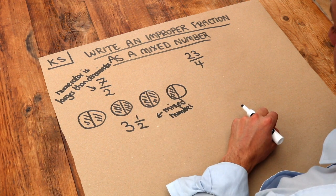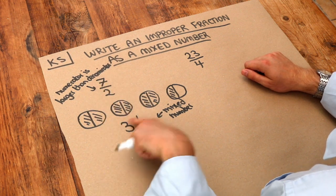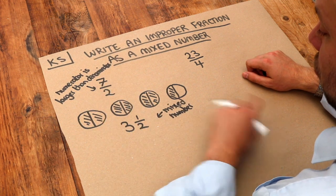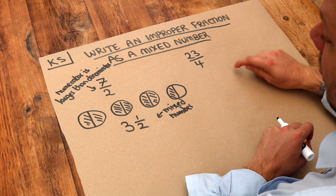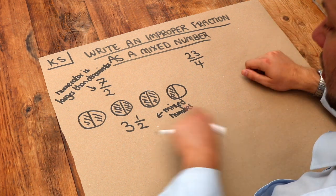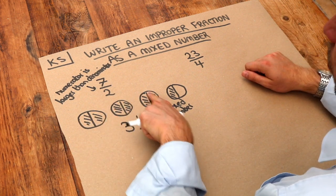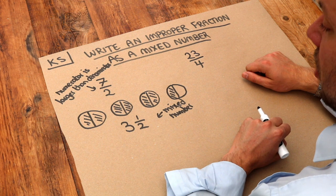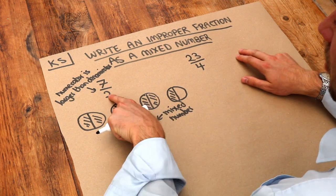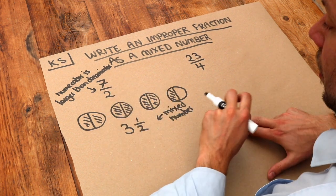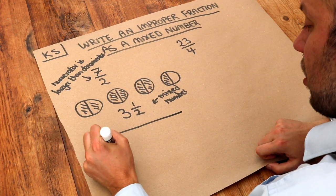You might think, is there a way we can convert this improper fraction to a mixed number without having to draw it out? Yes, there is. What we want to do is see how many whole pizzas we can make up, and the way we can do that is to see how many times 2 goes into 7. So if you do 7 divided by 2,